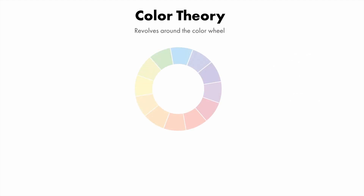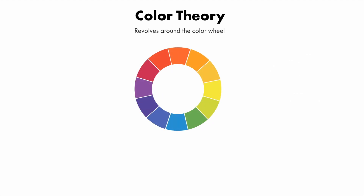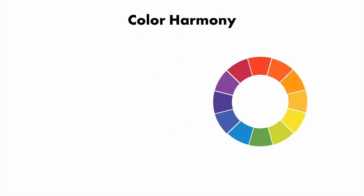I want to tell you about that in the form of a little animated video. Color theory revolves around the color wheel — it's about the formulas that create the basis for color palettes that have been proven to work harmoniously together. There are a few tried and true formulas we can refer to to help ensure we're creating good color harmony within our color palettes.